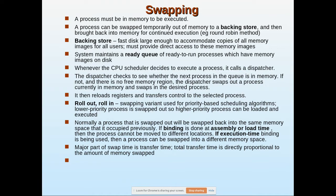A process must be in main memory to be executed. A process can be swapped temporarily out of memory to a backing store and then brought back into memory for continued execution. The backing store is a fast disk large enough to accommodate copies of all memory images of all users, and it must provide direct access to these memory images.